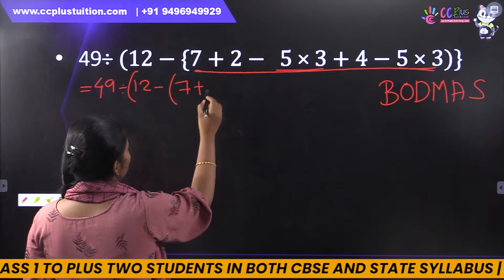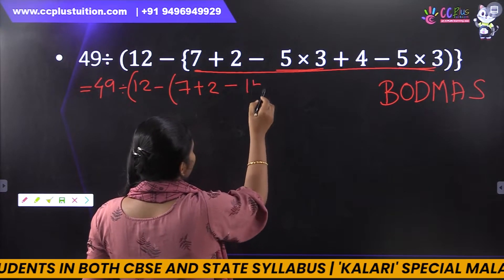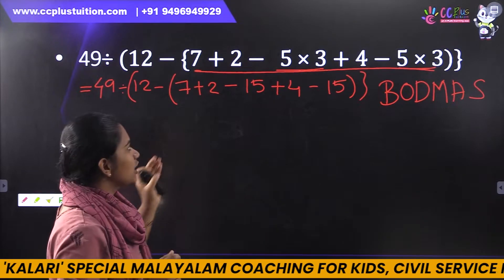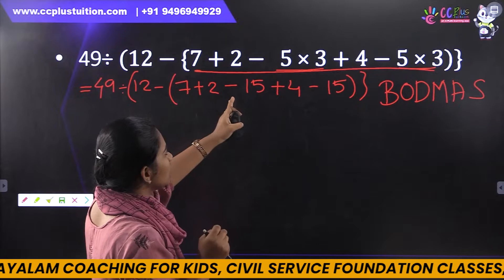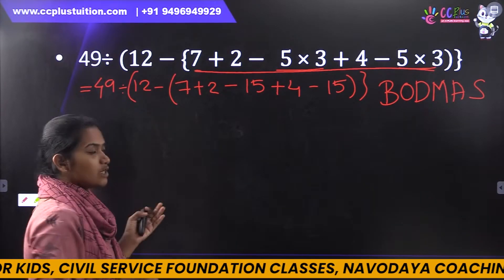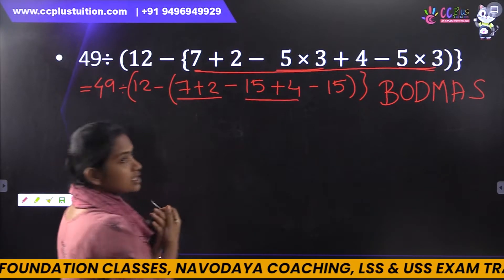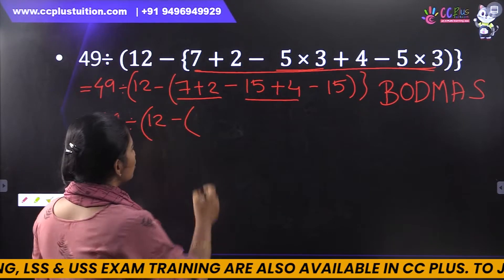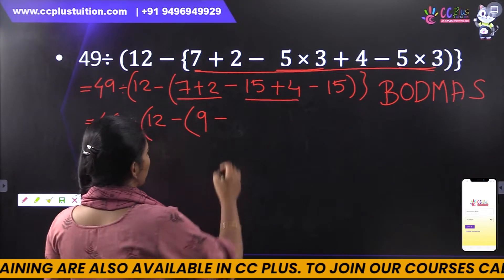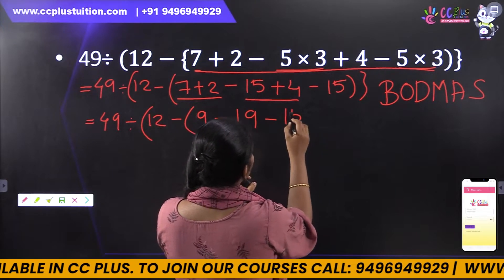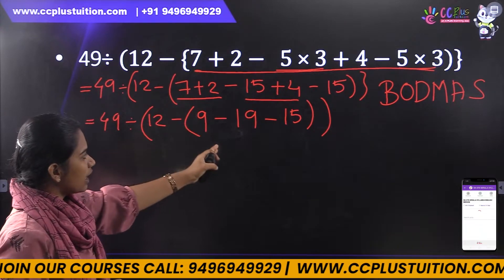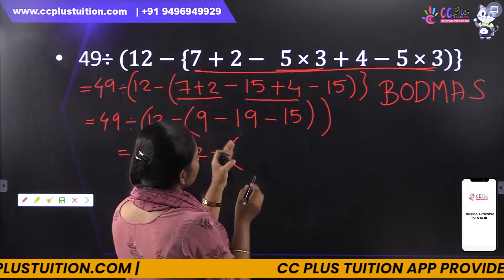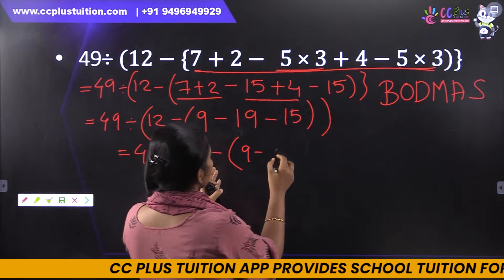Now, 7 plus 2 — that is minus. 5 into 3 is 15. Plus 4, minus 15. Now in this bracket there are many operations — plus and minus. 7 plus 2 is 9. 15 plus 4 is 19. So 49 divided by 12 minus 9 minus 19 minus 15. That gives 9 minus 19 minus 15.